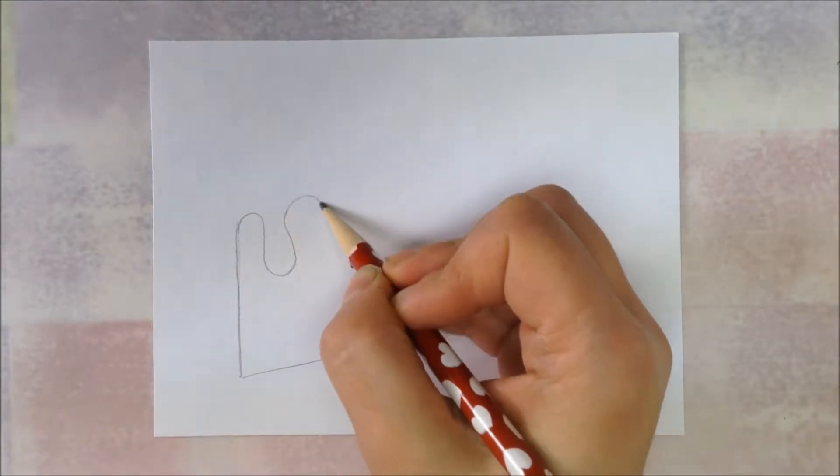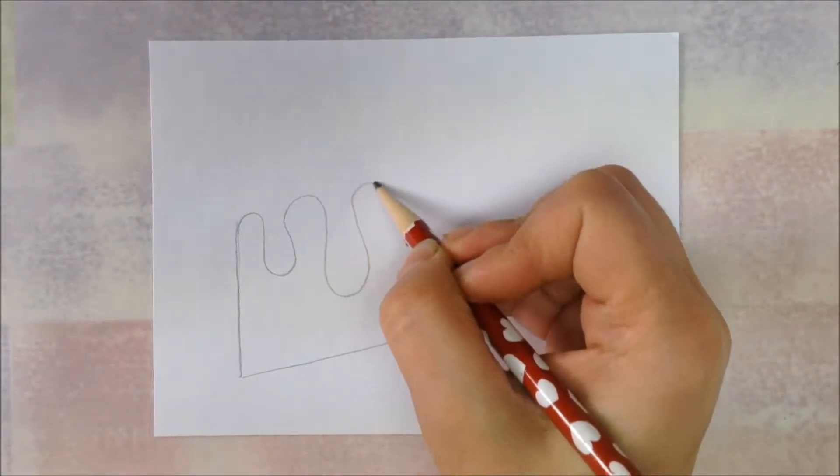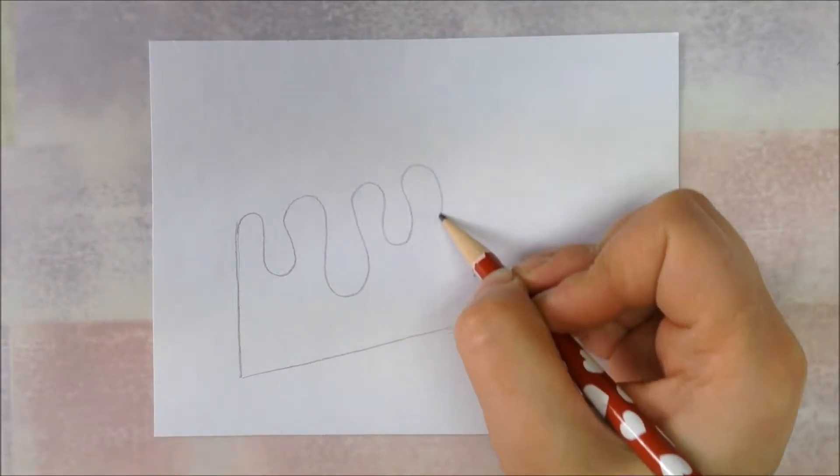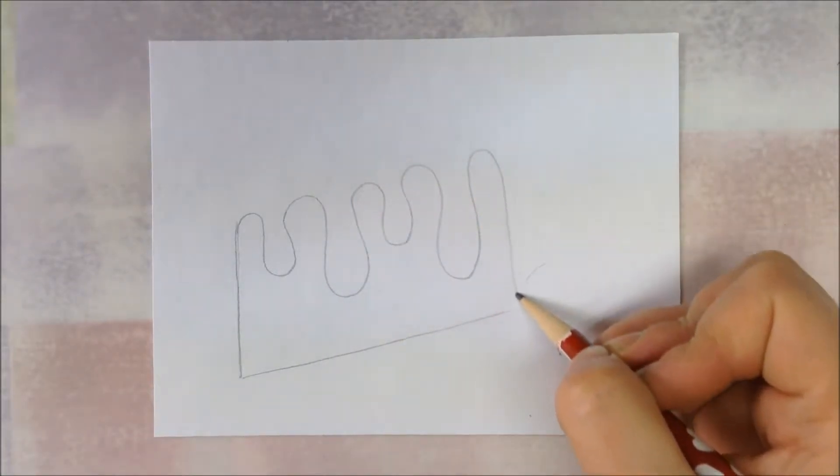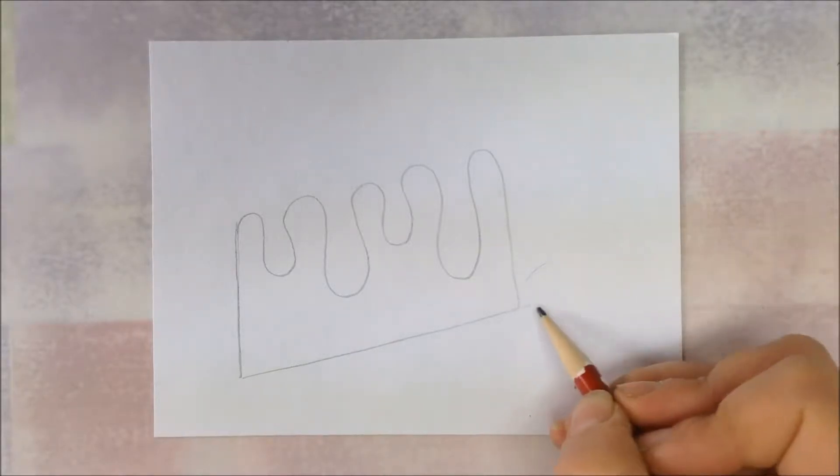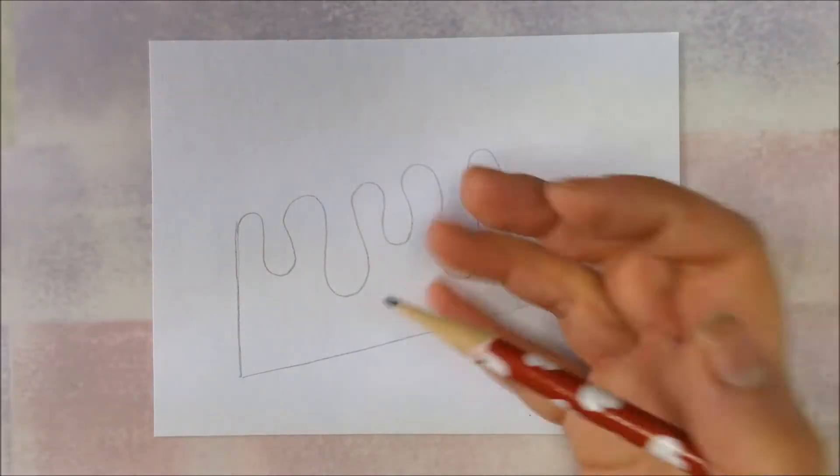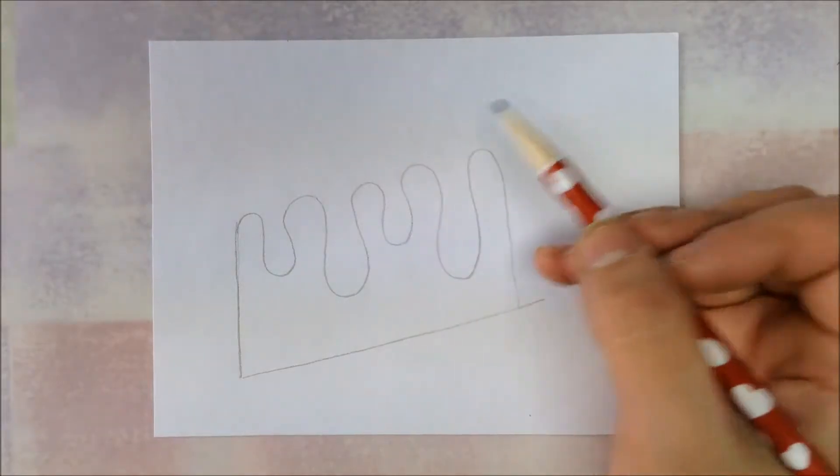And we're going to draw the frosting. We're going to draw a wavy line down, and then a longer one and a shorter one and a longer one, and then end with a straight line down. I'm going to make it a little bit longer. I didn't leave quite enough room for this frosting that's on the outer edge.